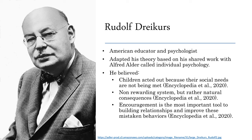Let's start with a little background information on our theorist. Rudolf Dreikurs was an American educator and psychologist. He adapted this theory based on his shared work with his colleague Alfred Adler, and they mainly focused on individual psychology. He believed that children acted out because their social needs were not being met. He also believed that this theory was not based on a reward system, but rather on the natural consequences that followed these behaviors, and that encouragement is the most important tool for building relationships and improving these mistaken behaviors.